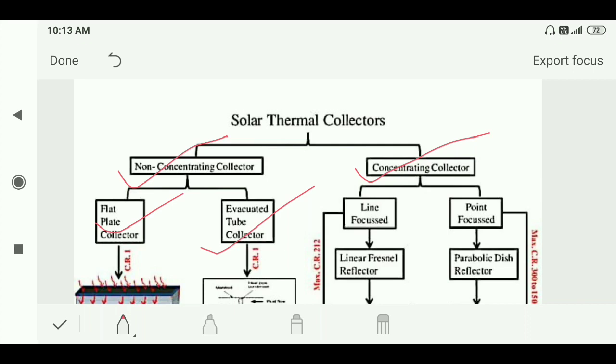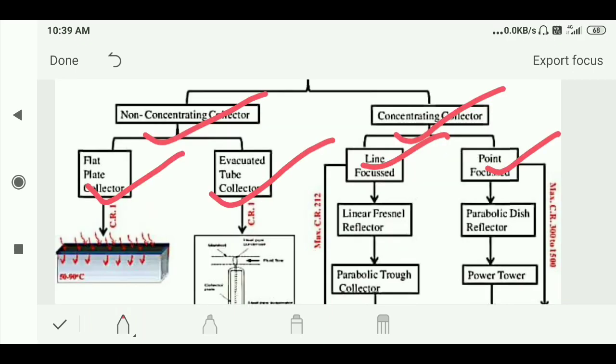Concentrating collectors are line focused and point focused. In line focus, there are types like linear thermal reflector and parabolic trough collector. And in point focus, there are parabolic disc reflector and power tower.